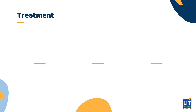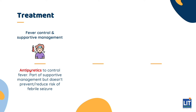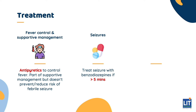Treatment of febrile seizures mostly consists of using antipyretics to control the fever. Antipyretics are part of supportive management; however, they do not prevent or reduce the risk of febrile seizures. Any seizure that lasts more than five minutes or results in compromise of circulatory or respiratory function should be treated with benzodiazepines.